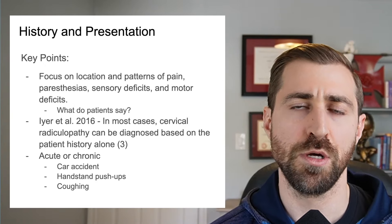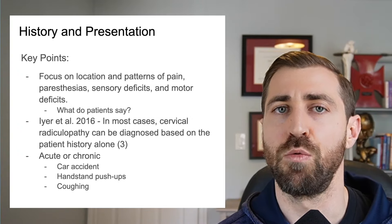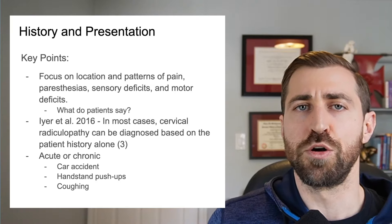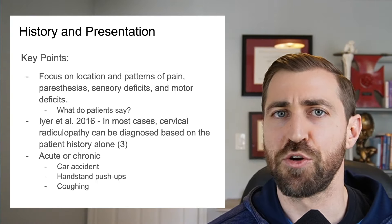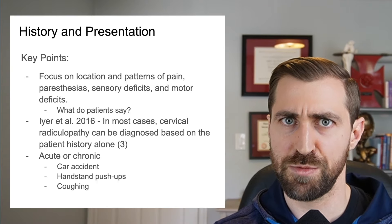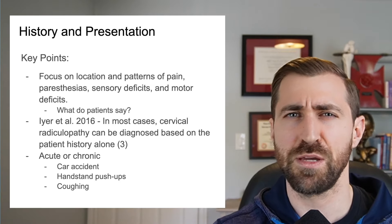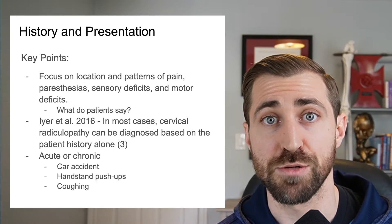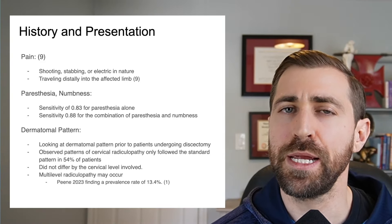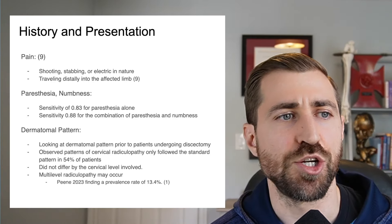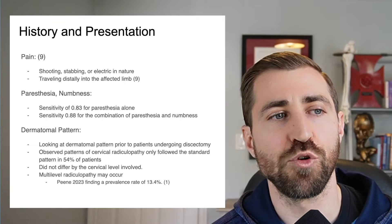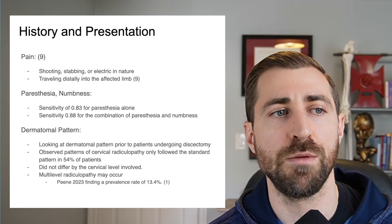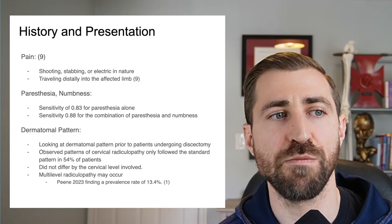These injuries can be either acute or chronic in nature. Acute examples include a car accident, patients dropping barbells on their neck, or doing handstand push-ups and banging their head on the floor with immediate weakness and pain radiating down the arm. I've also had patients with very gradual onset — a little numbness and tingling in the fingertips over time that turns into pain, eventually severe arm pain with neck pain. When patients describe their pain, they usually say it is shooting, stabbing, or electric in nature, and it travels distantly into the affected limb. Many will say the pain radiates down and shoots into their fingers — a classic sign of cervical radiculopathy.